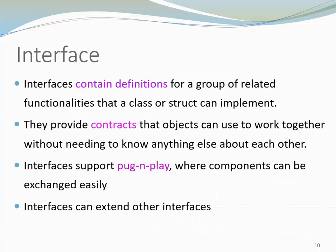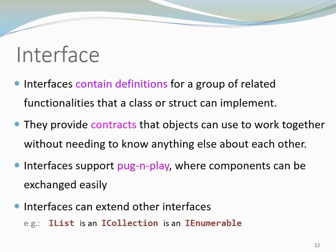Another thing I want to point out is that interfaces can extend other interfaces. I could, for example, create an interface iColorPrinter that is an iPrinter. That means my interface iColorPrinter would include all the members from iPrinter, and we could add additional ones — for example, a method that allows the user to print in color. Another example would be iList, which is an iCollection, which is an iEnumerable.